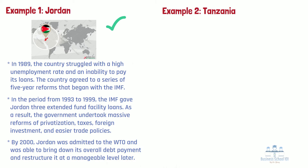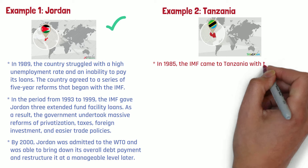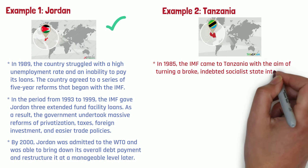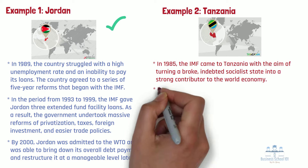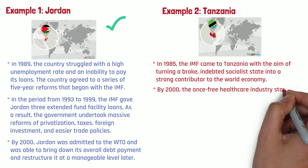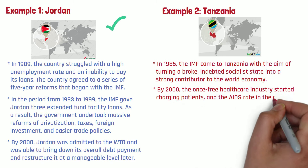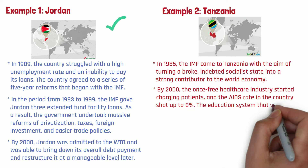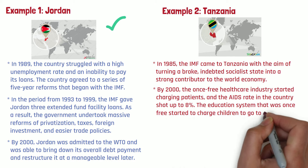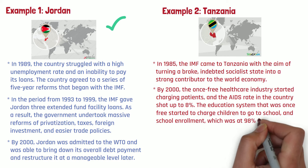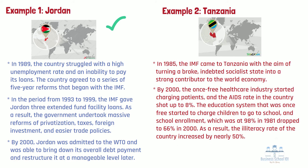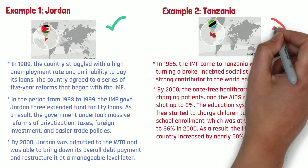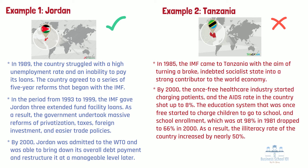Second, Tanzania. In 1985, the IMF came to Tanzania with the aim of turning a broke, indebted socialist state into a strong contributor to the world economy. The first steps taken were to lower trade barriers, cut government programs, and sell state-owned industries. By 2000, the once free healthcare industry started charging patients, and the AIDS rate in the country shot up to 8%. The education system that was once free started to charge children to go to school, and school enrollment, which was at 98% in 1981, dropped to 66% in 2000. As a result, the illiteracy rate of the country increased by nearly 50%. This is an example of how the IMF failed to understand that a one-size-fits-all strategy does not apply to all countries.